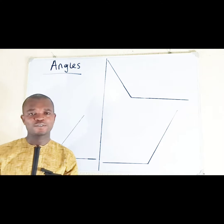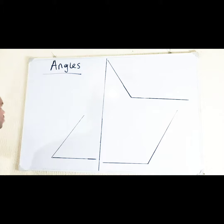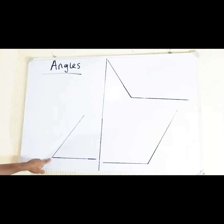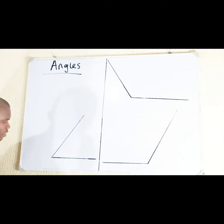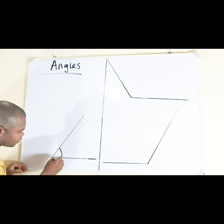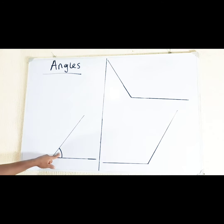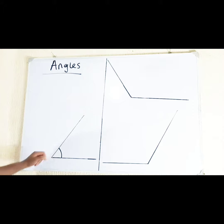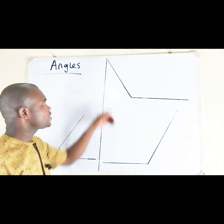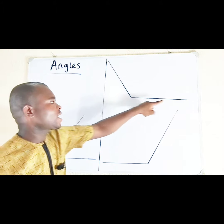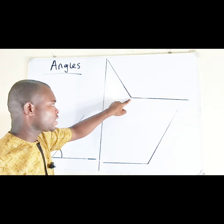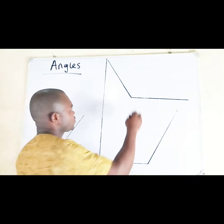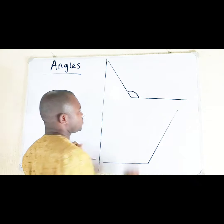So we are going to take examples. We have this line and this line — they meet each other here. Therefore, an angle is formed. Look at the angle formed between these two lines. Another one: this line and this line meet each other here. Therefore, an angle is formed.